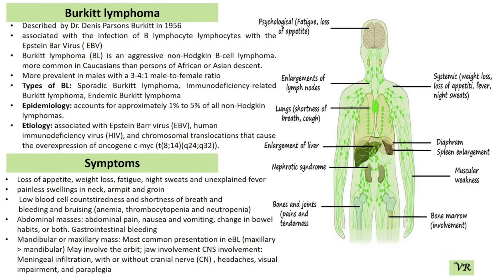The second type is sporadic, or non-African, which is more common in other parts of the world including the United States and Europe. It often presents as an abdominal mass or less commonly as a lesion in other organs.